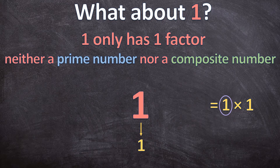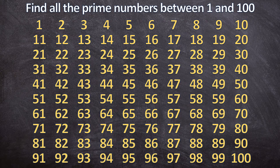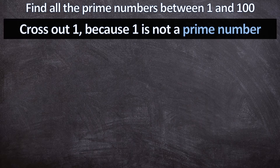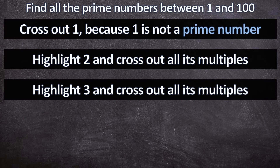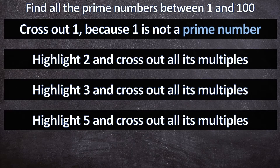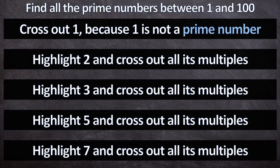So now that we know what a prime number is, let's find all the prime numbers between 1 and 100. You're going to write all your numbers from 1 up to 100, and then there are 5 steps to follow. Step 1: cross out 1 because it's not a prime number. Step 2: highlight 2 and cross out all its multiples. Step 3: highlight 3 and cross out all 3's multiples. Step 4: highlight 5 and cross out all 5's multiples. Step 5: highlight 7 and cross out all its multiples.